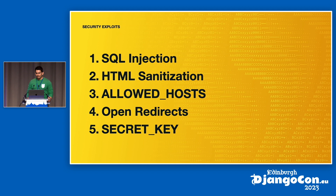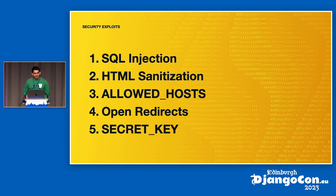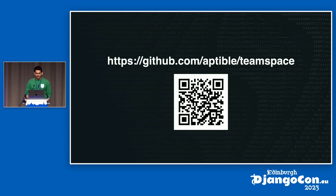I found that the best way to understand security for myself is to actually work through the exploits. While frameworks do keep you out of trouble most of the time, all of these security exploits we'll see today can happen in any framework — it really just takes a second of laziness or carelessness. We're going to be talking about five specific vulnerabilities: SQL injection, bad HTML sanitization, misconfiguration of your allowed hosts, open redirects, and a leaked secret key. We also have a repo available where you can see all the code, with open PRs showcasing each vulnerability and its fix.